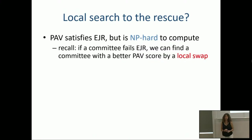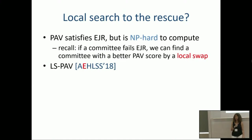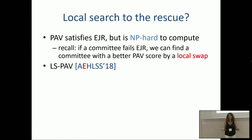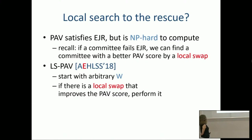How did we show that a committee maximizing PAV score provides EJR? By means of a local swap. If you look at a committee and cannot find a local swap that improves the PAV score, then by that same argument, the committee has to provide EJR — because the argument was exactly: if EJR is failed, there is an improving local swap. Contrapositive: no improving local swap implies EJR is satisfied. That suggests a natural local search algorithm: start with an arbitrary committee, and if there is a local swap that improves the PAV score, perform it. Once there is no improving swap, you stop and your result satisfies EJR.